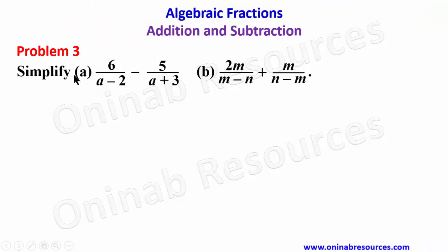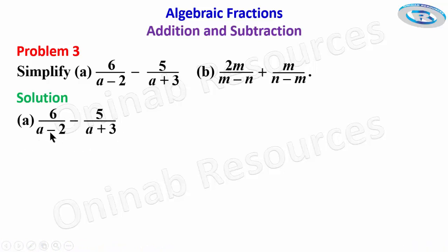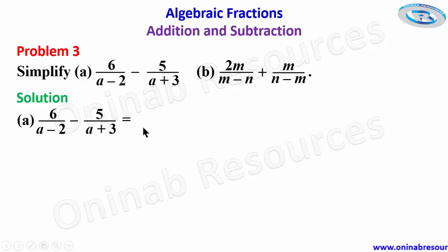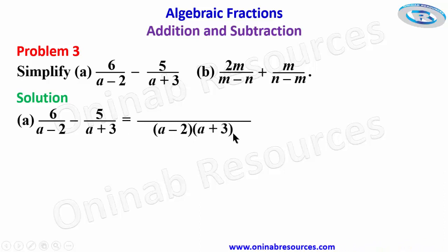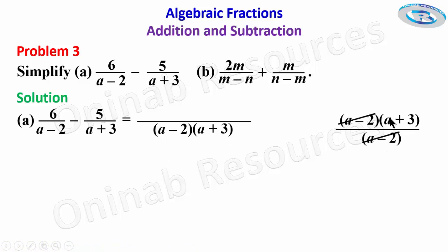For problem 3 we have to simplify two parts, (a) and (b). In the solution we start from (a). We find the LCM of the denominators, which are (a minus 2) and (a plus 3). The LCM will be (a minus 2) times (a plus 3). We divide this LCM by the first denominator — (a minus 2) cancels — leaving (a plus 3), which is multiplied by 6. So we have 6 times (a plus 3).